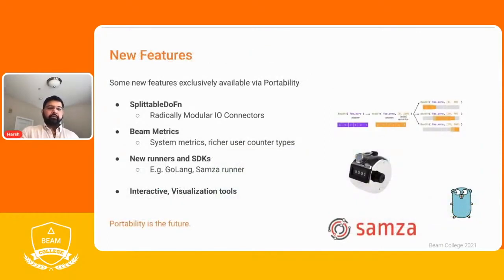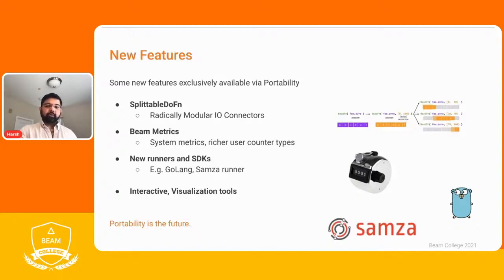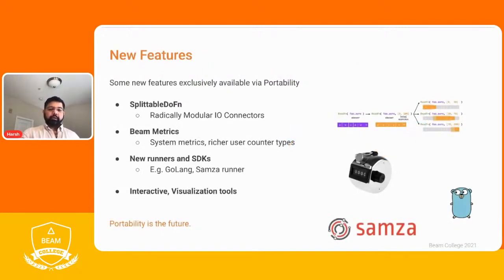This also allows us to deliver some new features. Splittable DoFns are a much better and more dynamic way to express sources. We also have a richer set of metrics, and we have access to new runners and SDKs — for instance, Golang was developed completely on this portability framework, and so was the Samza runner. Furthermore, it gives us things like interactive visualization tools that make things better. That concludes the overview of portability. Now I'll go over the second part of the talk, which relates to auto-scaling in Dataflow — an example of how specific runners can improve the execution of Beam pipelines internally without affecting Beam itself.